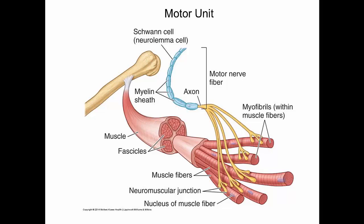You can also voluntarily contract only a specific part of a muscle, which is especially important when a single muscle has two or more functions — for instance, the anterior part of the deltoid muscle flexes the arm while the posterior fibers extend it. At the neuromuscular junction, the transmitter released is acetylcholine. This is why neurofibers to skeletal muscle are termed cholinergic, and they can be blocked by toxins such as curare.